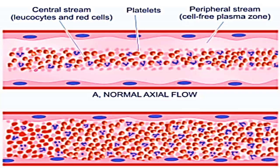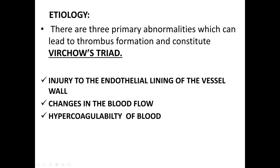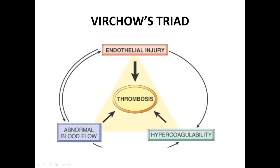When this flow is disturbed, the formed elements of the blood come in contact with the endothelial cells of the blood vessel. Regarding the etiology, there are three primary abnormalities which can lead to thrombus formation and constitute Virchow's triad: number one, injury to the endothelial lining of the vessel wall; two, changes in blood flow; and three, hypercoagulability of blood.